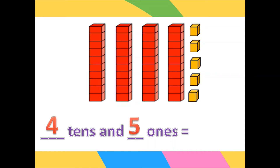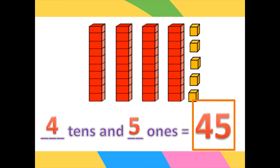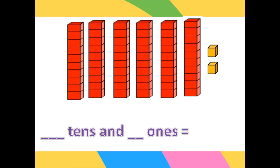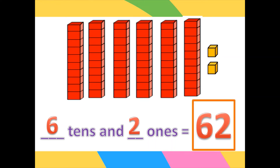Very good — there are five ones. So there are 45 in total. For the next example, how many tens are there? Very good — there are six tens and two ones, so we have 62 blocks. Do you understand, children? Very good — you can represent ones and tens using blocks.